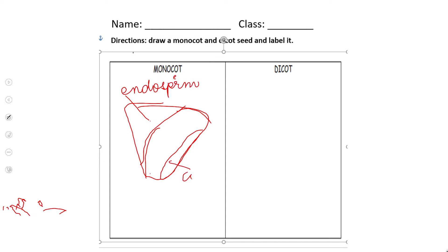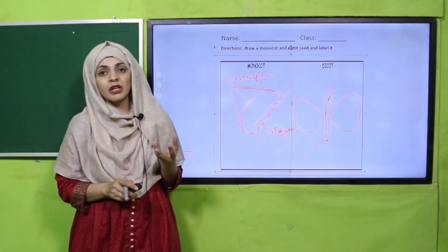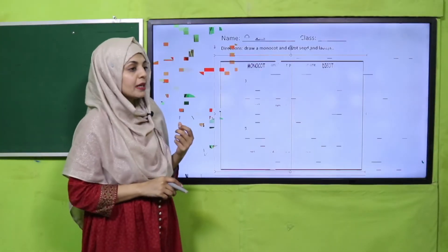This is the endosperm. Two cotyledons are present; here is the radicle and here is the plumule. This is how you will make the diagrams and label them.